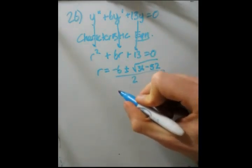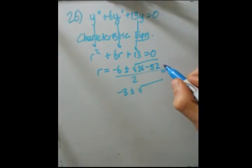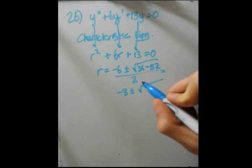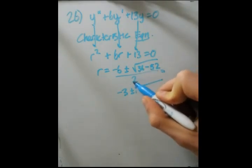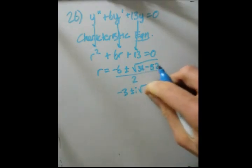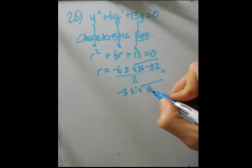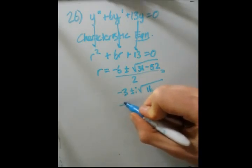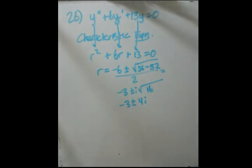And so this turns out to be negative 3 plus or minus the square root. What's under here would be negative 16. So we can pull out an i to make that positive 16. Bring this in, we get 4. Or, sorry, 16 inside. Now, we can now simplify this.